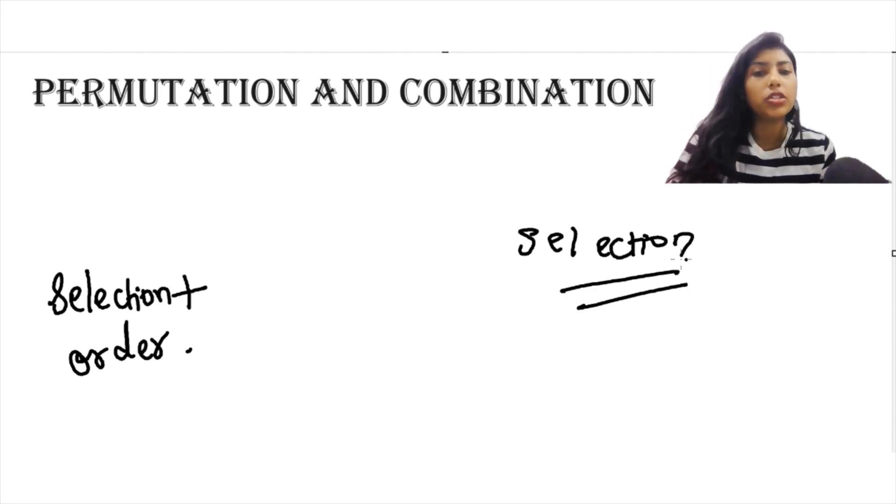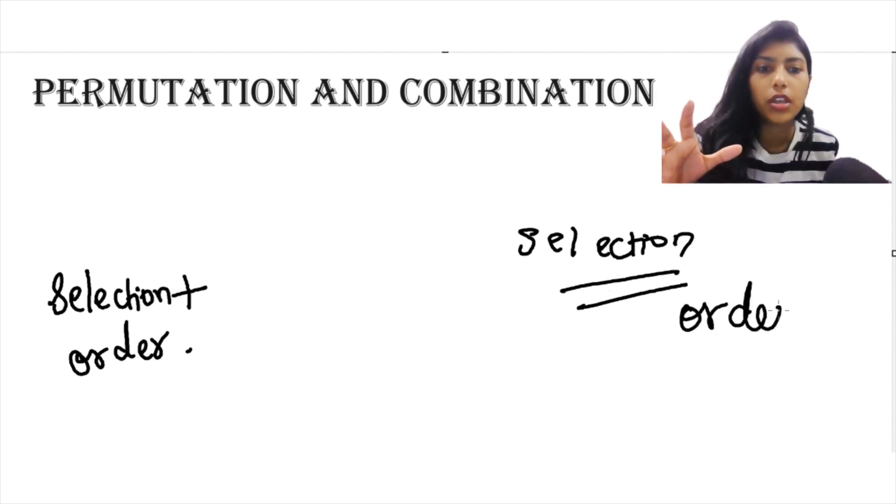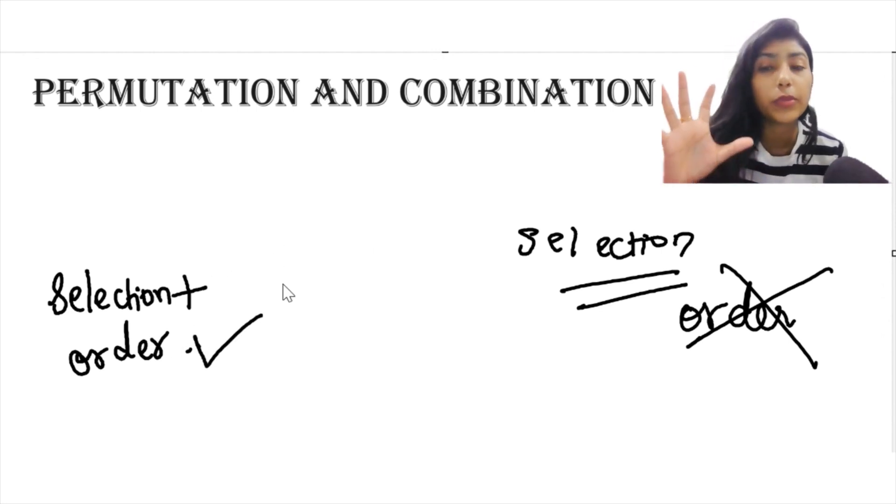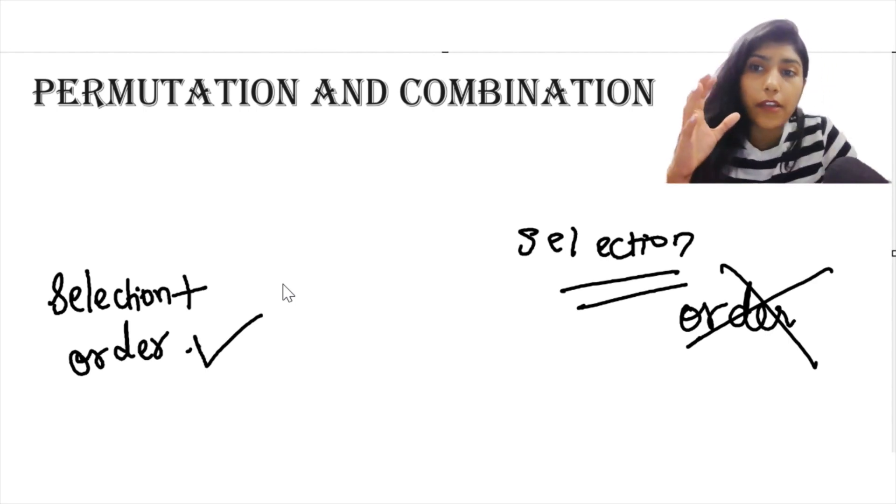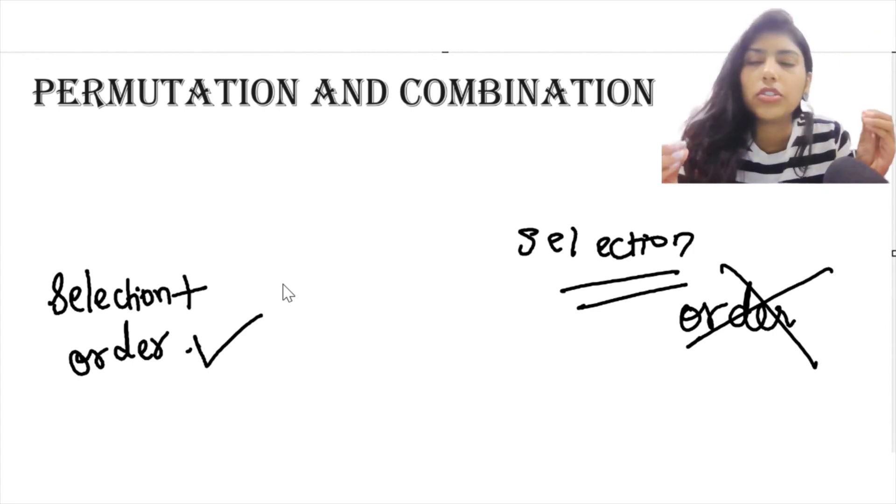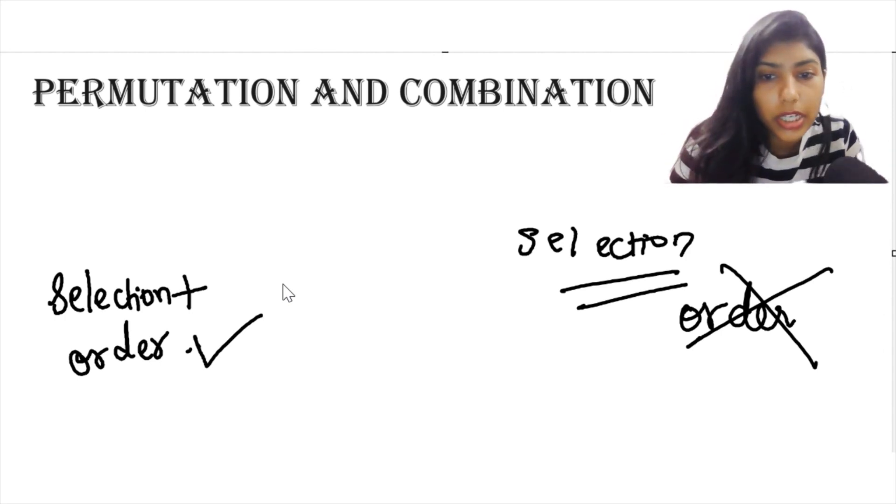In combination, the order in which you are going to pick up those objects does not count at all. Your order does not matter. But in permutation, your order matters. And that is the only difference between permutation and combination. And we have been given formulae. Basically, all you need to do is identify the question whether it falls under combination or permutation. And then all you have to do is apply it in the formula, use your logic and arrive at the answer. To give you a better explanation of the difference between combination and permutation, I am going to take an example.